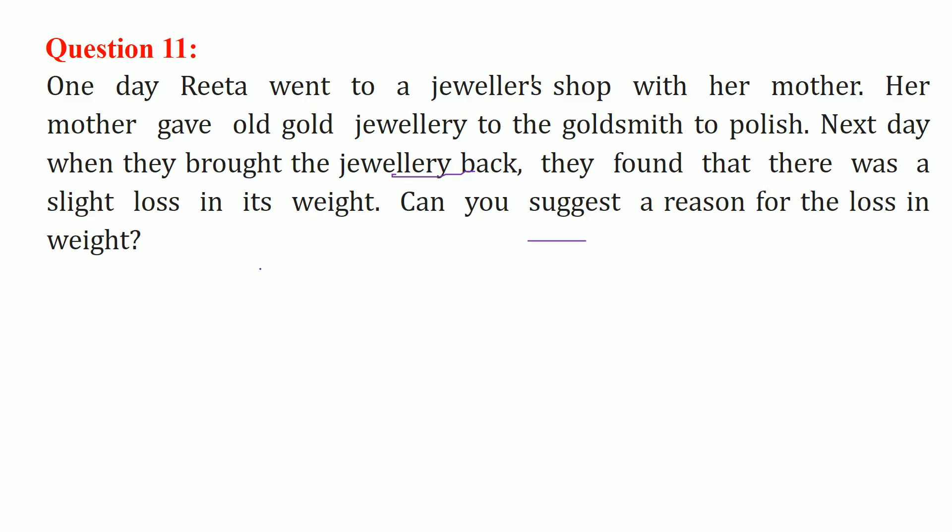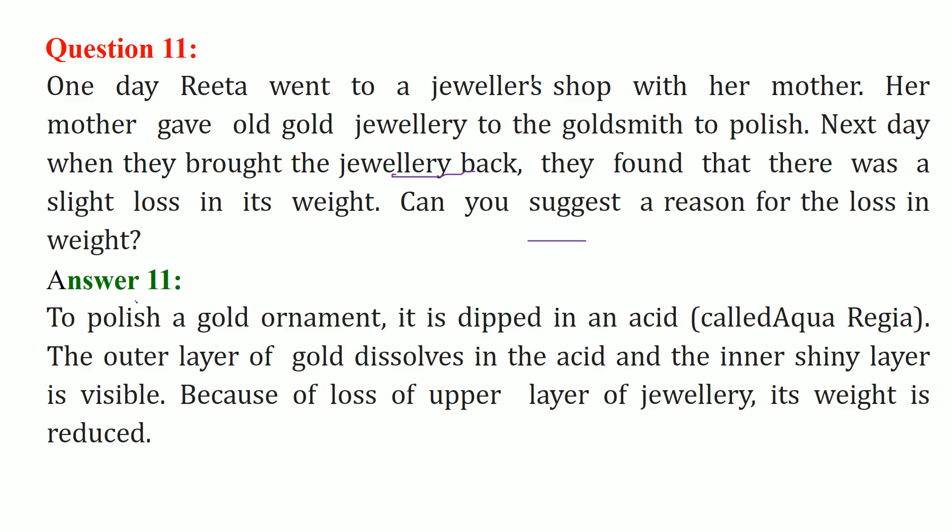To polish a gold ornament, it is dipped in an acid called aqua regia. The outer layer of gold dissolves in the acid and the inner shiny layer comes up, which is visible and shows it has been polished.